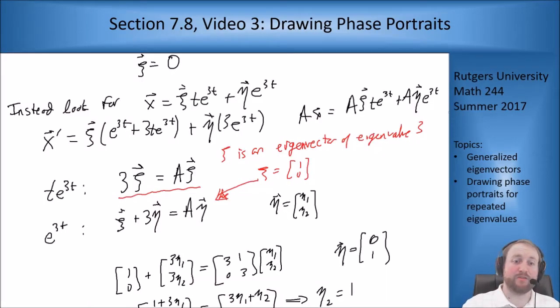Before we get started with the phase portrait stuff I want to draw our attention to one thing we had in the notes from last time. We were trying to solve for vectors and we came to these two equations for ξ and η, these two random vectors that show up in our general solution for the repeated eigenvalue case. I'm going to rewrite those solutions and talk about what they mean in terms of the vectors themselves.